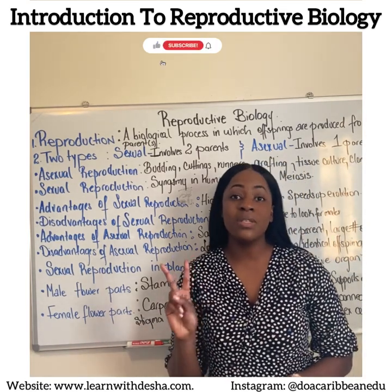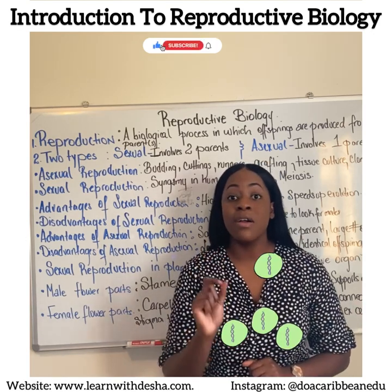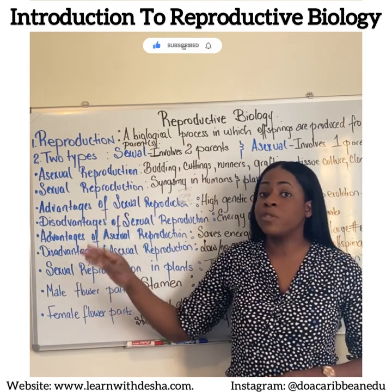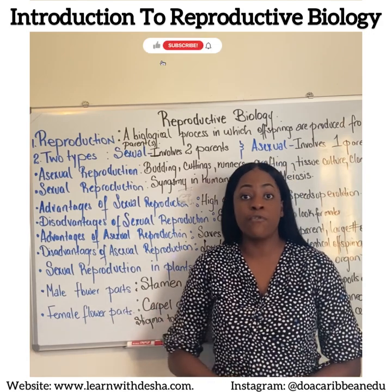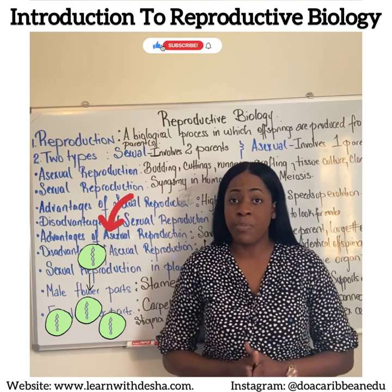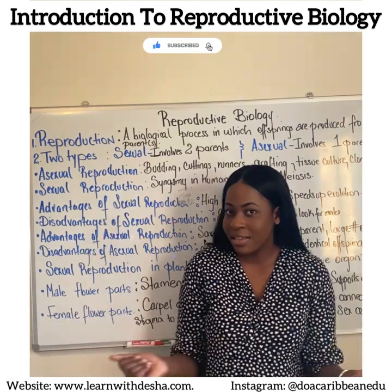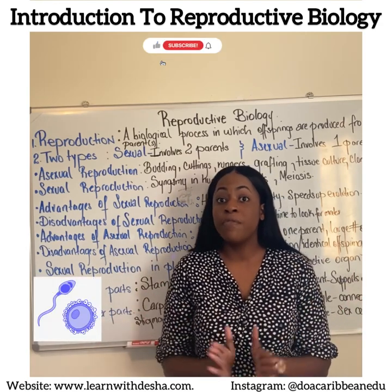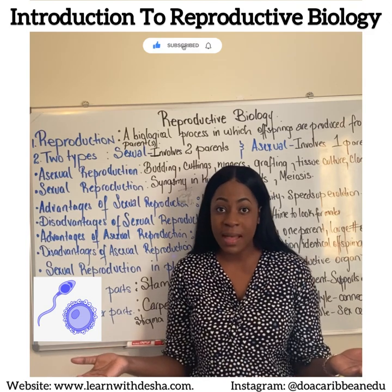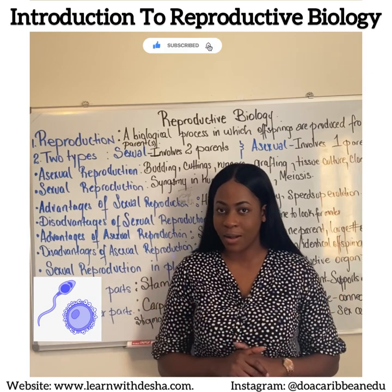There are two types of reproduction: asexual reproduction and sexual reproduction. Asexual reproduction involves the production of an offspring from one parent. Coming from one parent, that offspring is going to be identical. And there's sexual reproduction, which involves the fusion of the male sex cell with the female sex cell to produce an offspring that is not identical to the parent.